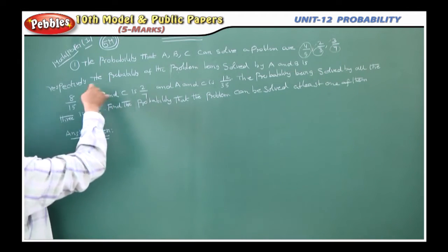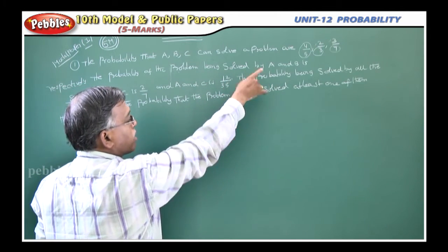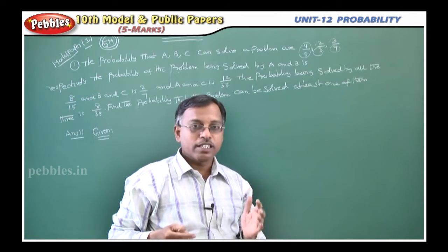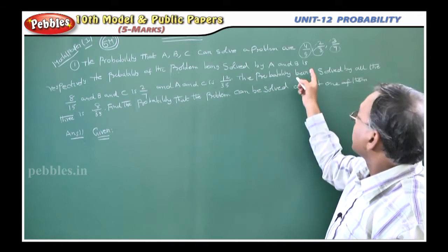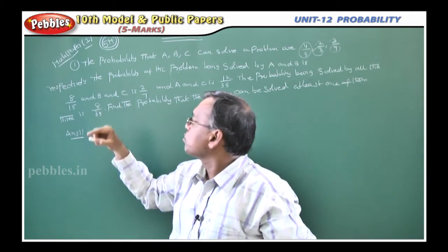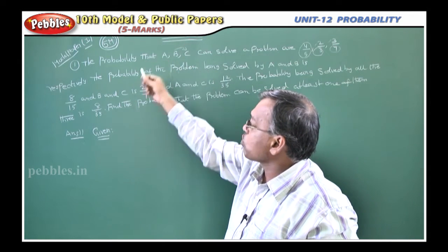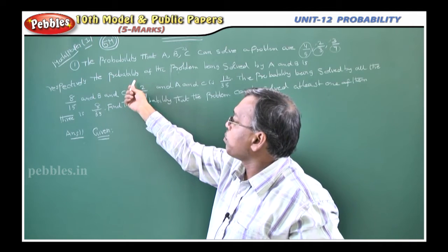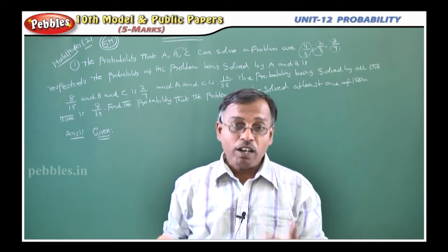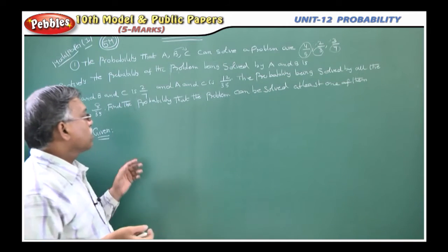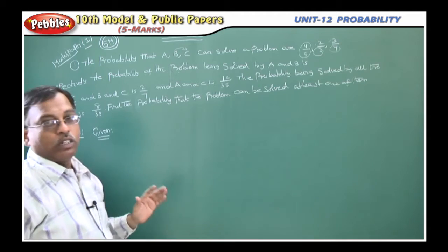Next, the probability of the problem being solved by A and B together — that is the intersection part — is 8 by 15. Again, if B and C work together, it can be solved with probability 2 by 7, and A and C gives 12 by 35. Then what they ask: what is the probability that the problem can be solved by at least one of them?